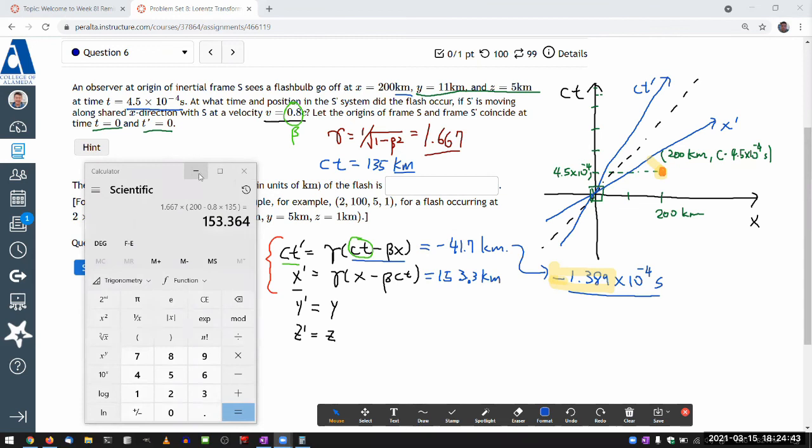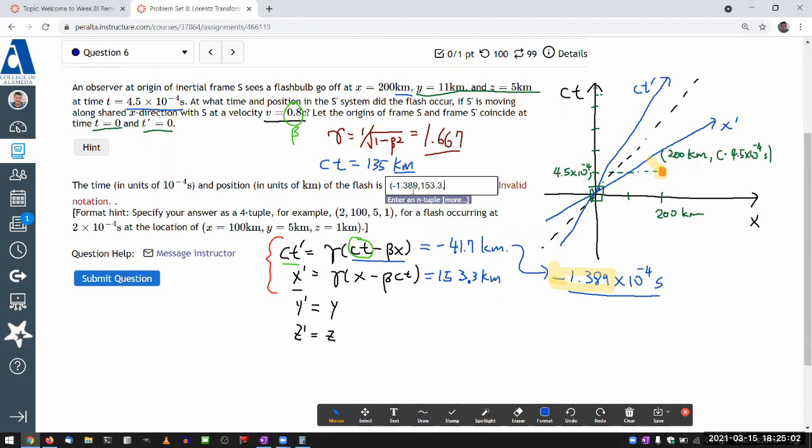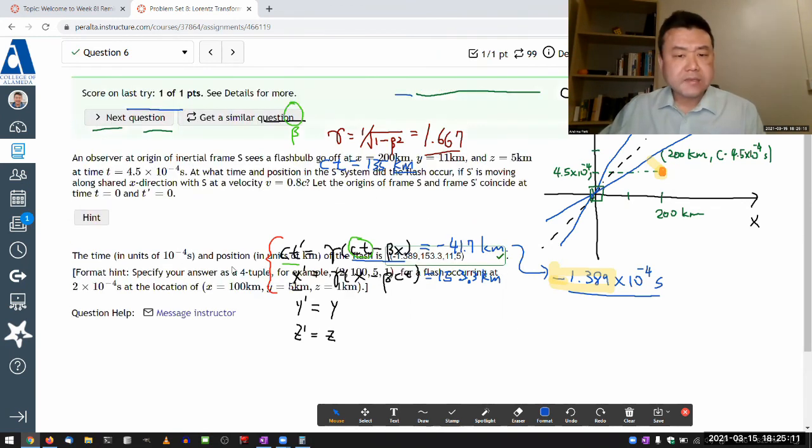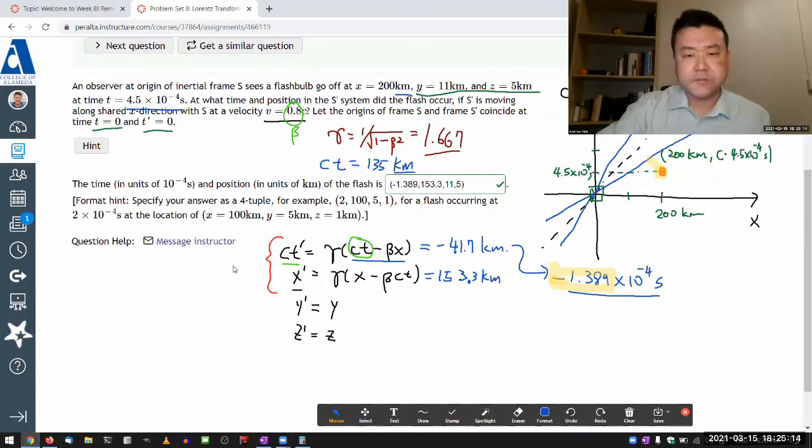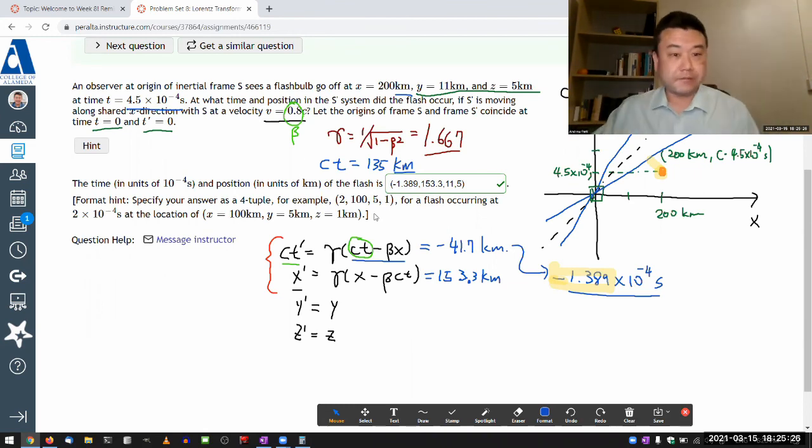I think I'm ready. So the answer here should be minus 1.389, 153.3. Oh, and I need Y and Z coordinates, 11 and 5, which did not change. So that should be right. I guess we don't have that many questions that ask for answers in tuple notation. That's why I do give a format hint here. Hopefully that's enough that, you know, format.